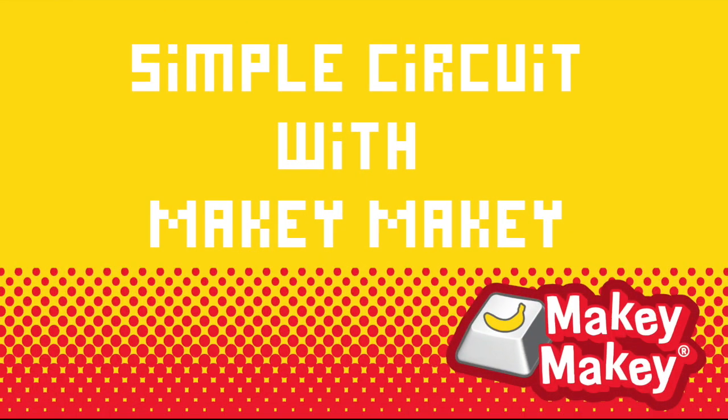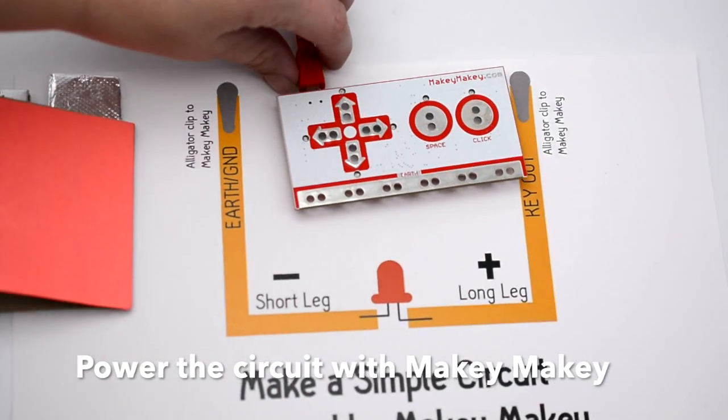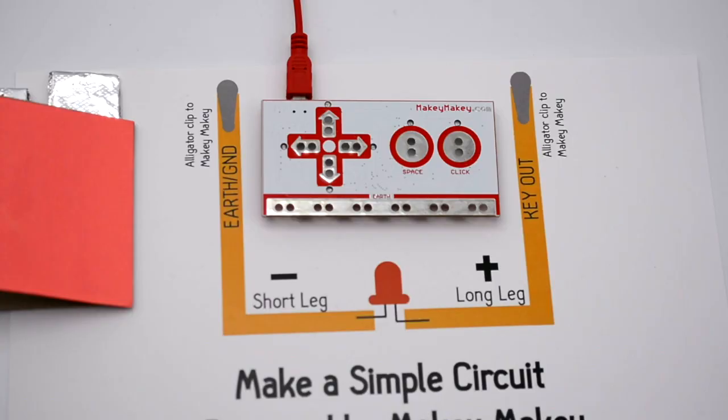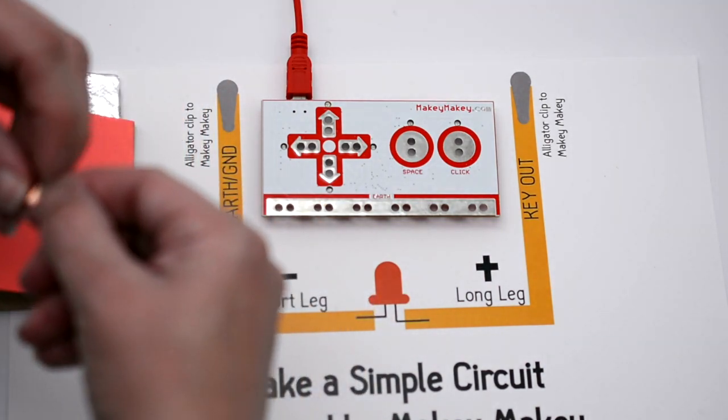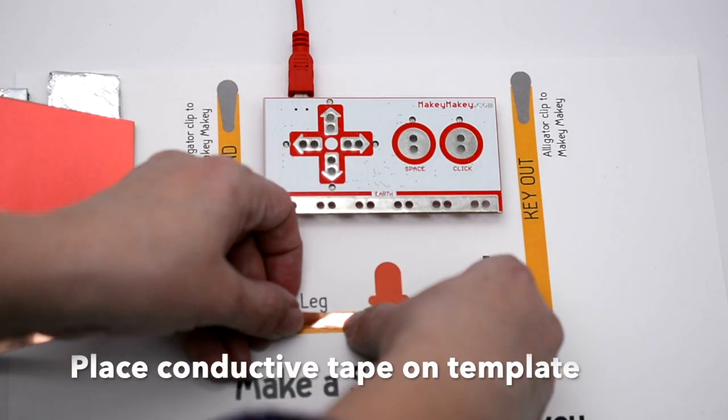Since electricity flows in a loop, we can actually make the same circuit powered by a Makey Makey. So you're going to want to move that template aside. And now we're going to use the key out function on our Makey Makey to create a simple circuit. So you're going to get your copper tape and you're going to lay it down nice and smooth.